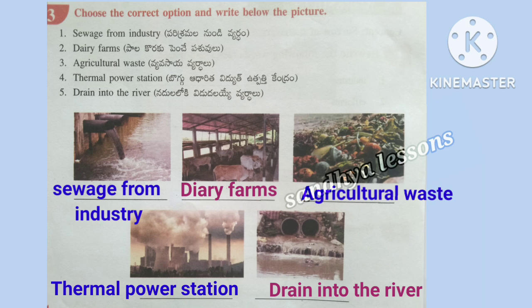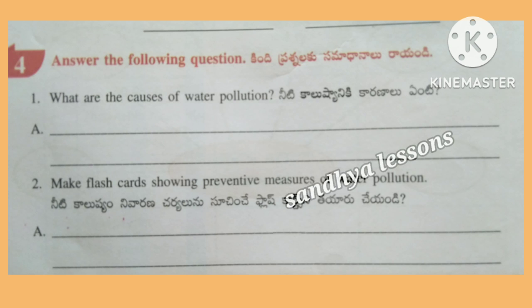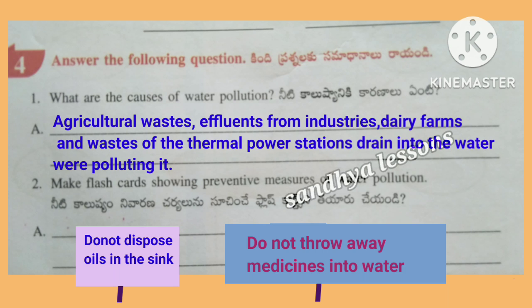Third, choose the correct option and write below the picture. First picture is Sewage from Industry, second picture is Dairy Farms, third picture is Agricultural Waste, fourth picture is Thermal Power Station, fifth picture is Drain into the River. Fourth, answer the following question. First: What are the causes of water pollution? Agricultural wastes, effluents from industries, dairy farms, and wastes of thermal power stations drain into the water, polluting it. Second question: Make flashcards showing preventive measures of water pollution.